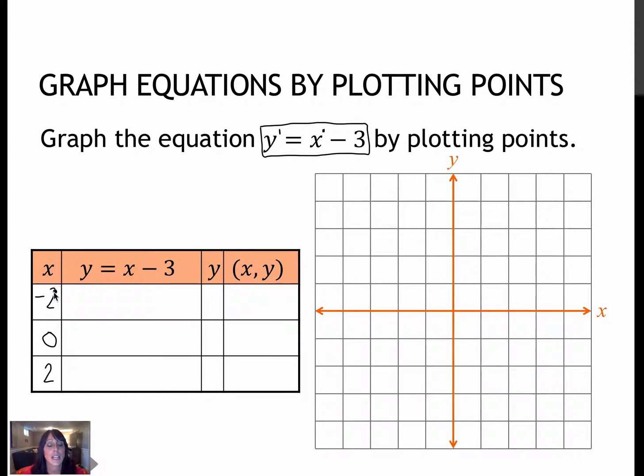So I'm going to use negative 2, 0, and 2, which means I'm replacing x with those values and then finding y. So y is equal to x minus 3. So x is negative 2. Negative 2 minus 3 is negative 5. So y is equal to negative 5, which means I'm going to plot negative 2, negative 5. That's 2 to the left and 5 down. Negative 2, negative 5.